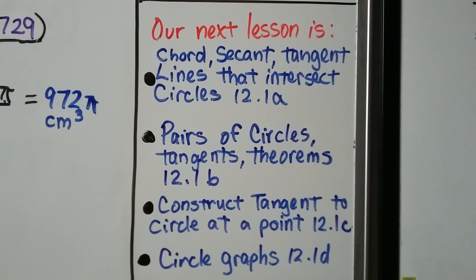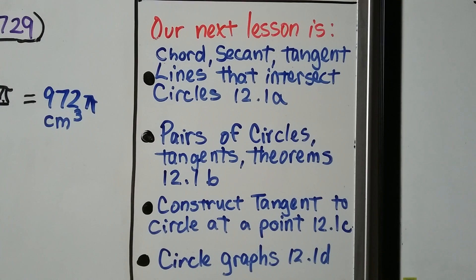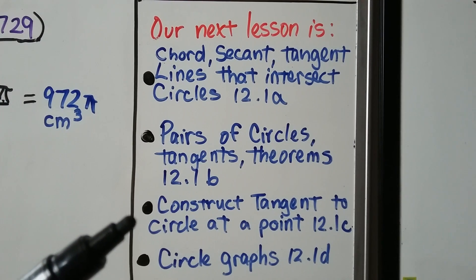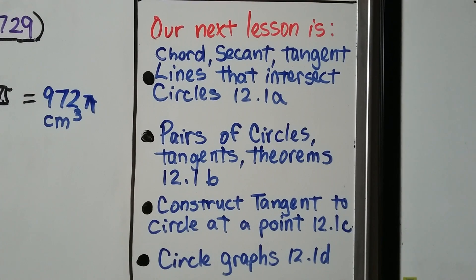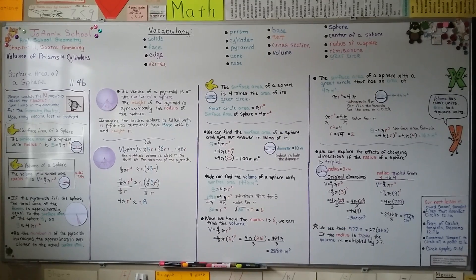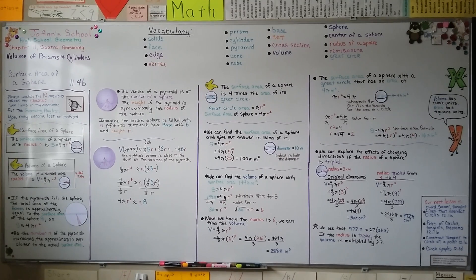We're now finished with chapter 11 on volume and moving on to chapter 12, which is all about circles. Lesson 12.1 is split into four parts: 12.1a covers chords, secants, and tangents; 12.1b covers pairs of circles, tangents, and theorems; 12.1c covers constructing a tangent to a circle at a point; and 12.1d covers circle graphs. Remember: the surface area of a sphere is 4 times the area of its great circle. Keep your formulas handy, and I'll see you in chapter 12.